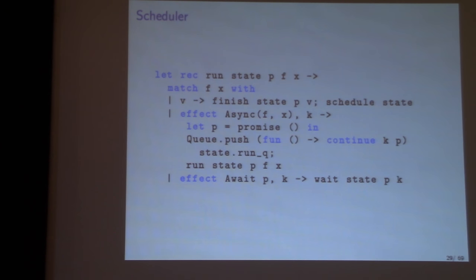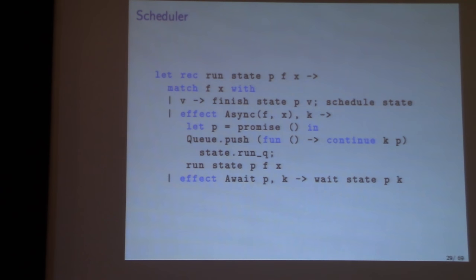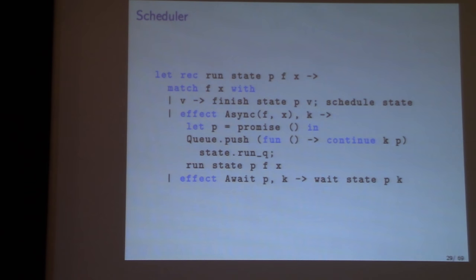The actual effect handler takes a function and a promise to put the value in. When done, it finishes the promise and schedules something else. If someone asks to execute something asynchronously, a new promise is created, the current continuation is put on the run queue, and the handler loops back to run the function F with value X and store the result in the promise. Await just calls the wait function from the previous slide.